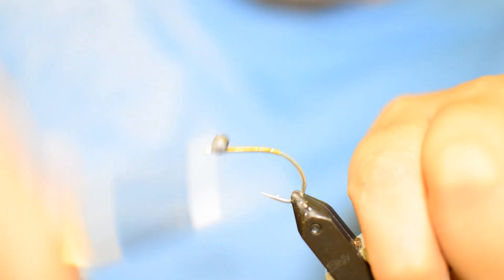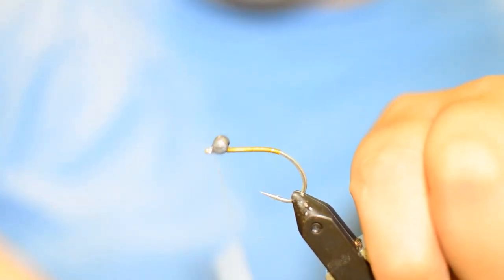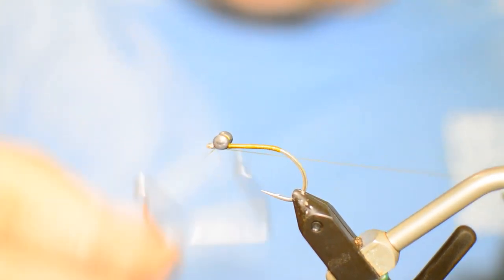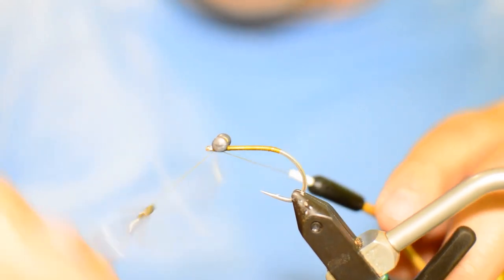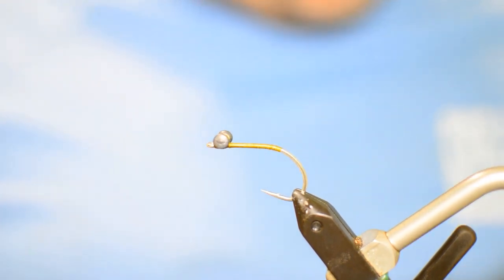And then all we're going to do is just work our thread back to the back of the hook. And then just come back forward, just building up a thread base, nothing too hard so far. This is just so when we glue down, we have something to glue to so it's not going to bare a hook shank.